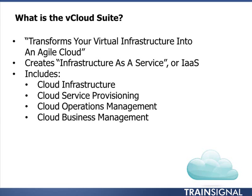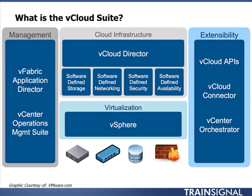Let's look at these in a graphical diagram so you can see how they all fit together. Starting at the center at the bottom, you've got your virtual infrastructure resources - servers, network, storage, and security represented by the firewall. Those data center resources are virtualized by VMware vSphere. VMware vCloud Director sits on top of vSphere, abstracting away everything related to vSphere for vCloud Director users. They're looking at their own software-defined data center, or a virtual data center as it's called in vCloud Director, with software-defined storage, networking, security, and availability.